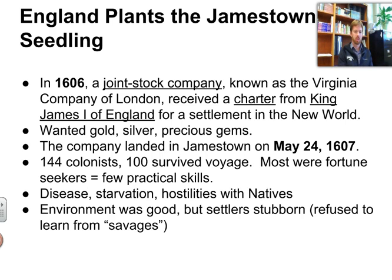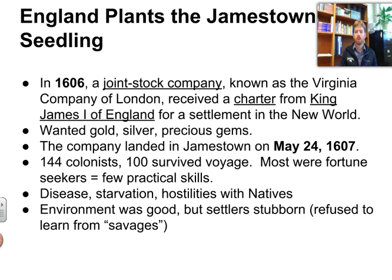In 1606 we had what's called a joint stock company, which is basically a company in which different wealthy people pool their money together. Each person owns stock in that company. This is called the Virginia Company of London, obviously based in England. They received what's called a charter from King James I of England — basically a grant to begin a colony, a grant to start a colony, a permission to start a colony in the New World.